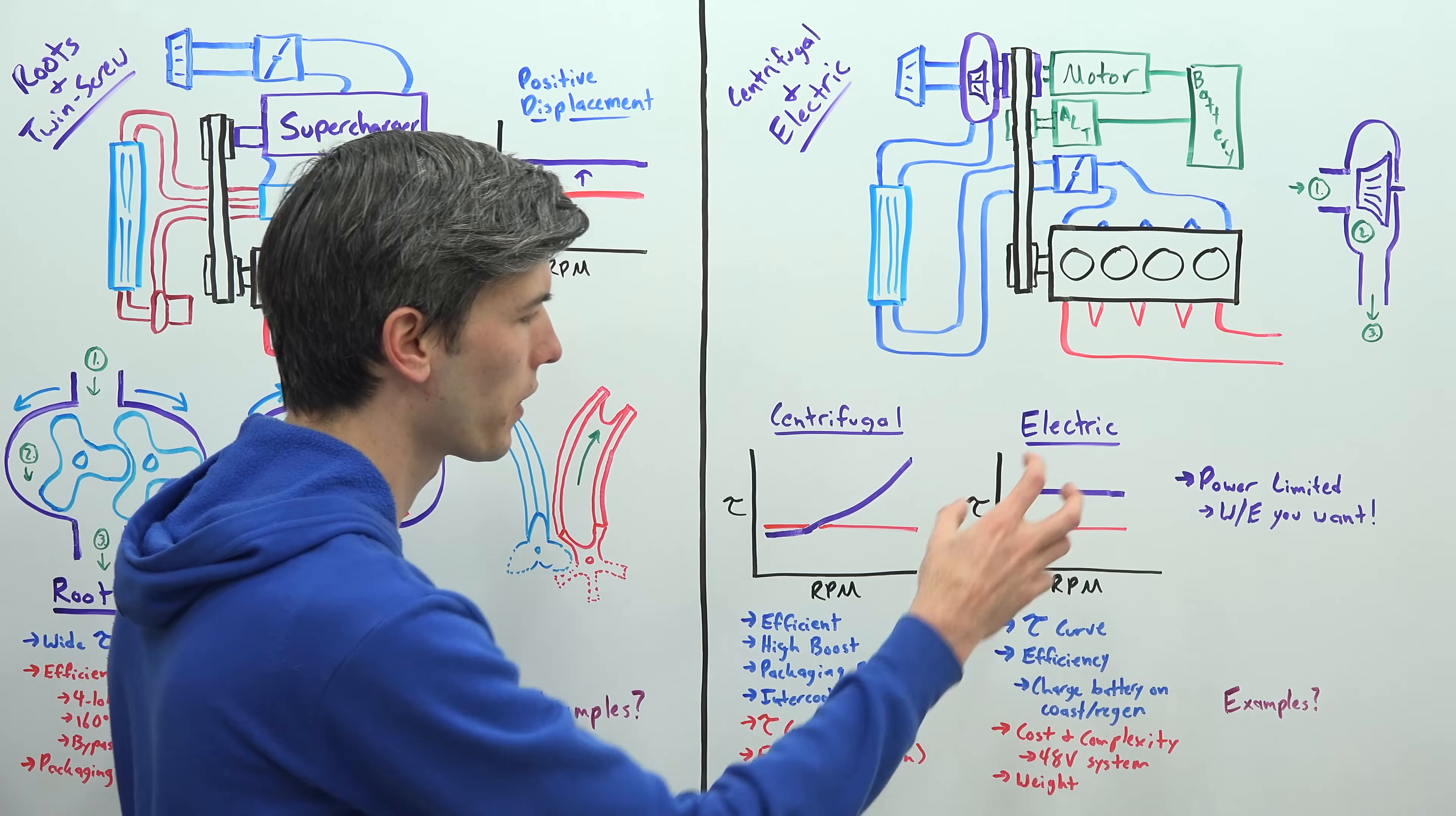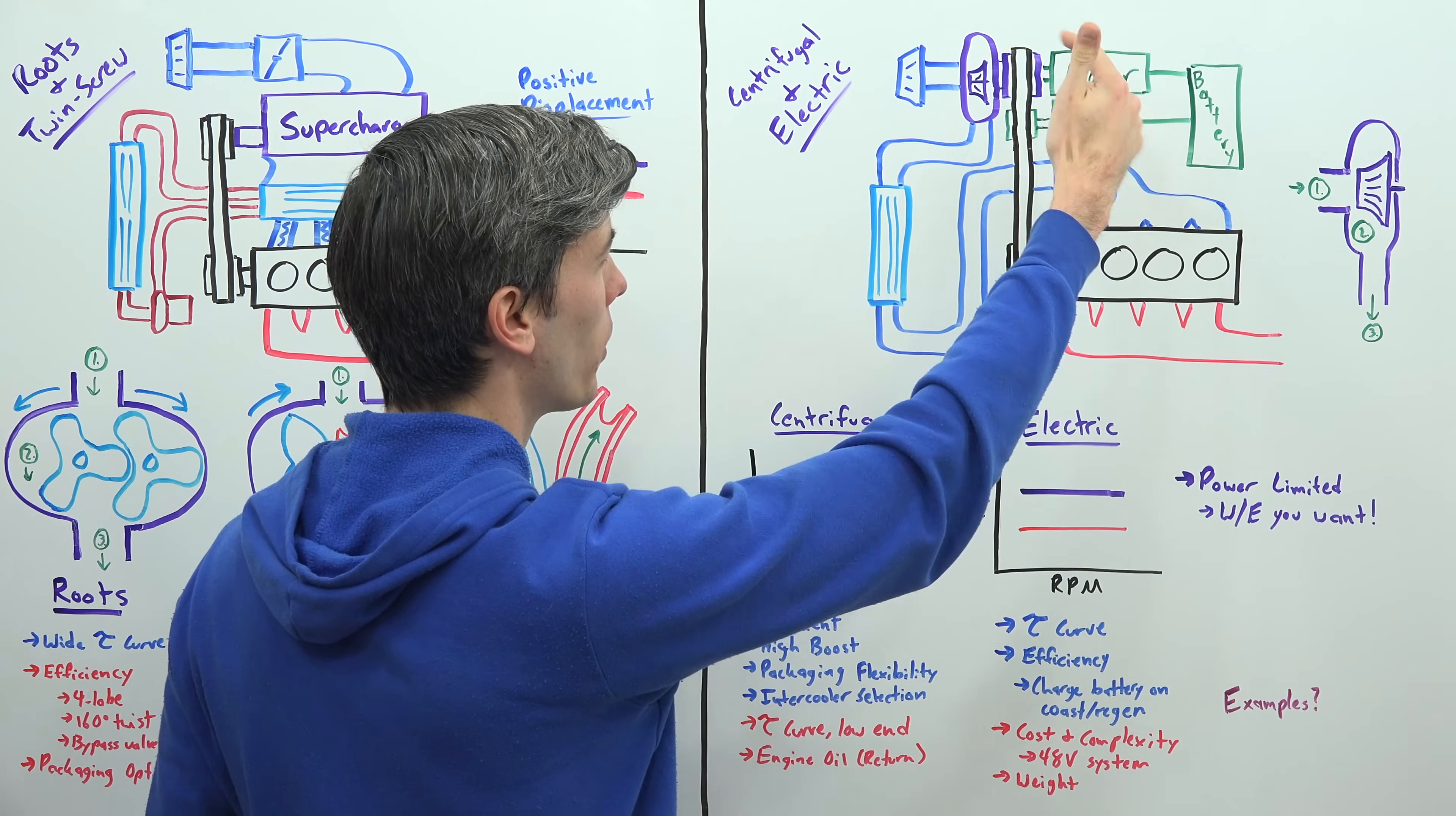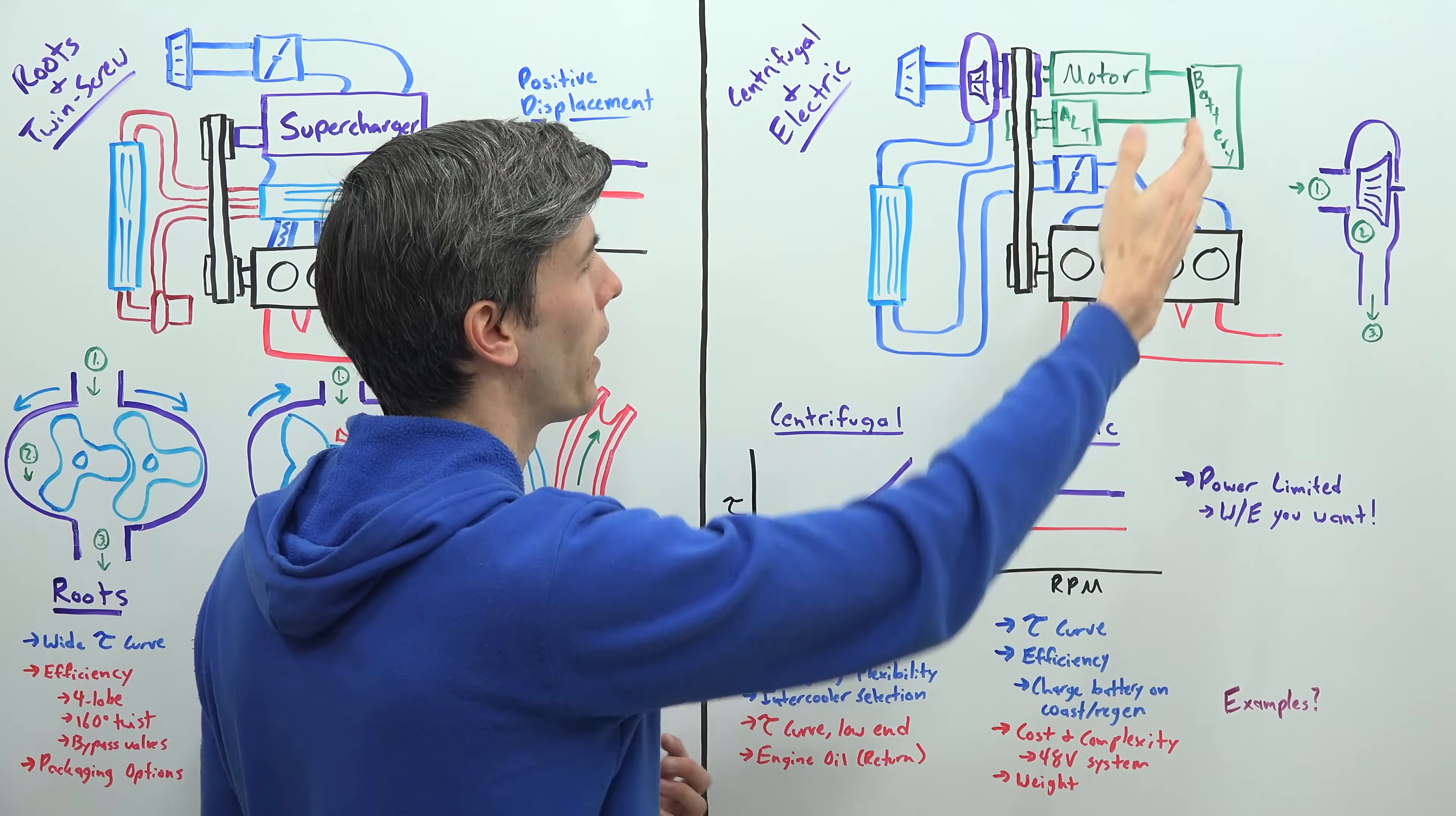As far as the electric style supercharger, of course the big advantage being the flexibility with that torque curve. Another advantage being efficiency, and that kind of depends - is it efficient to use an engine to power an alternator to charge a battery to send that energy to a motor and then spool up that compressor? No not necessarily. However there are scenarios where you can charge this battery basically for free.